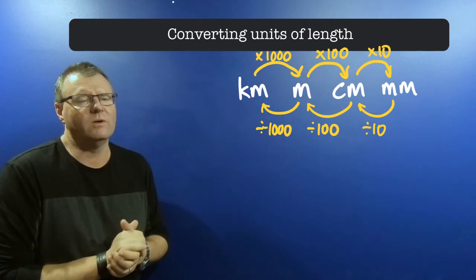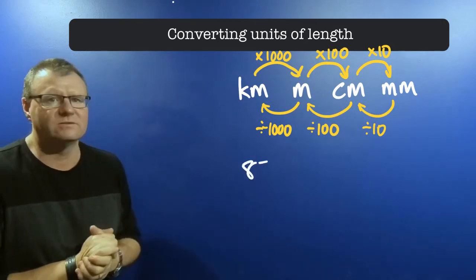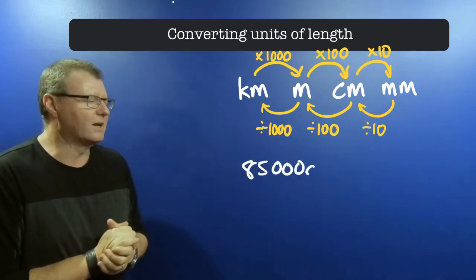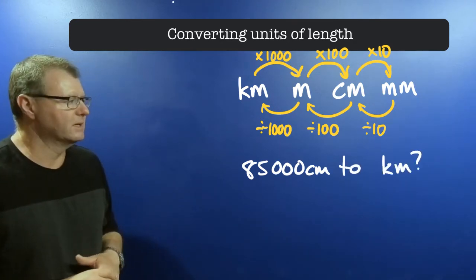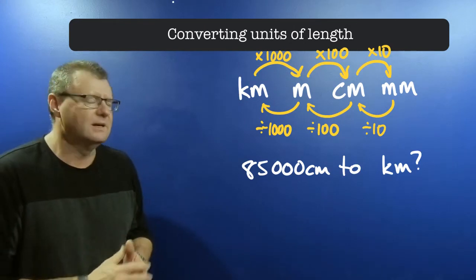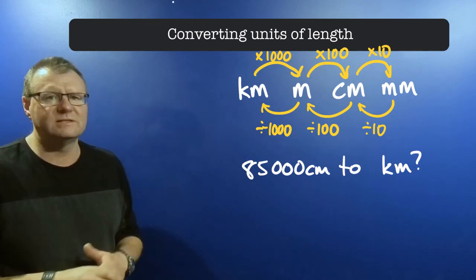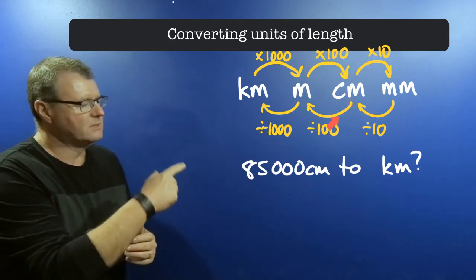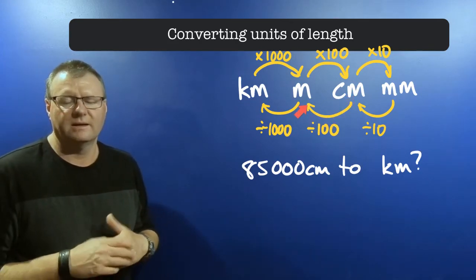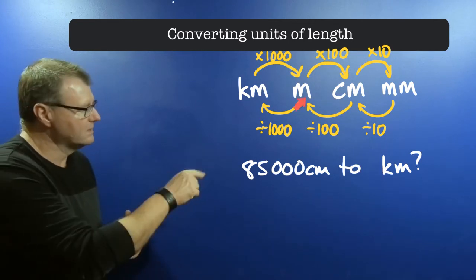What if I went the other way? What if I've got 85,000 centimeters and I want to convert that into kilometers? We start at centimeters, and if I follow the arrows, there are actually two steps. I've got to go from centimeters to meters—divide by 100—and from meters to kilometers—divide by 1,000.